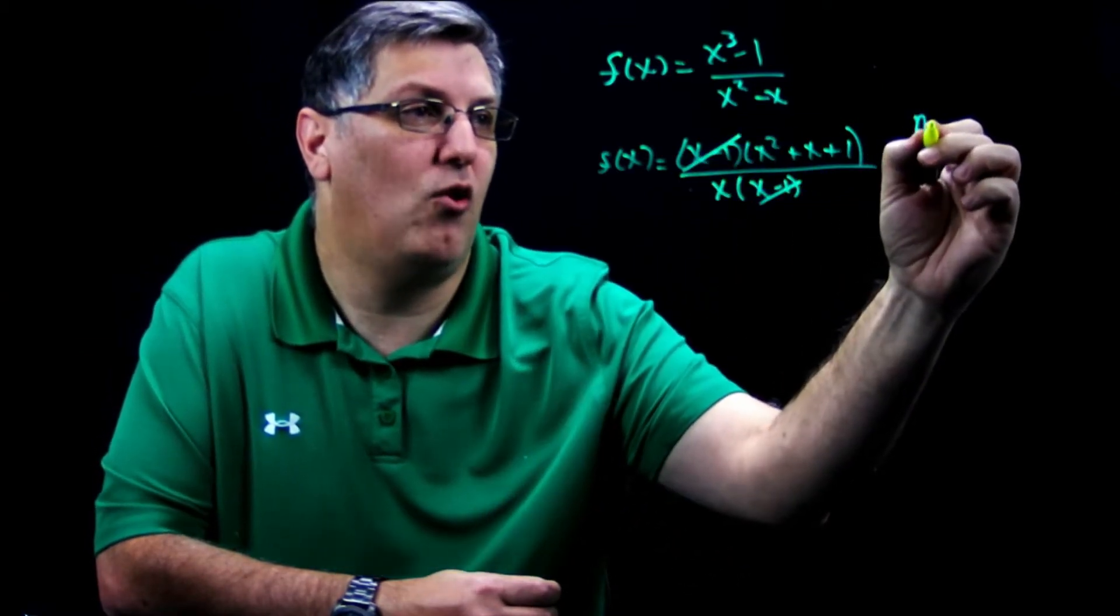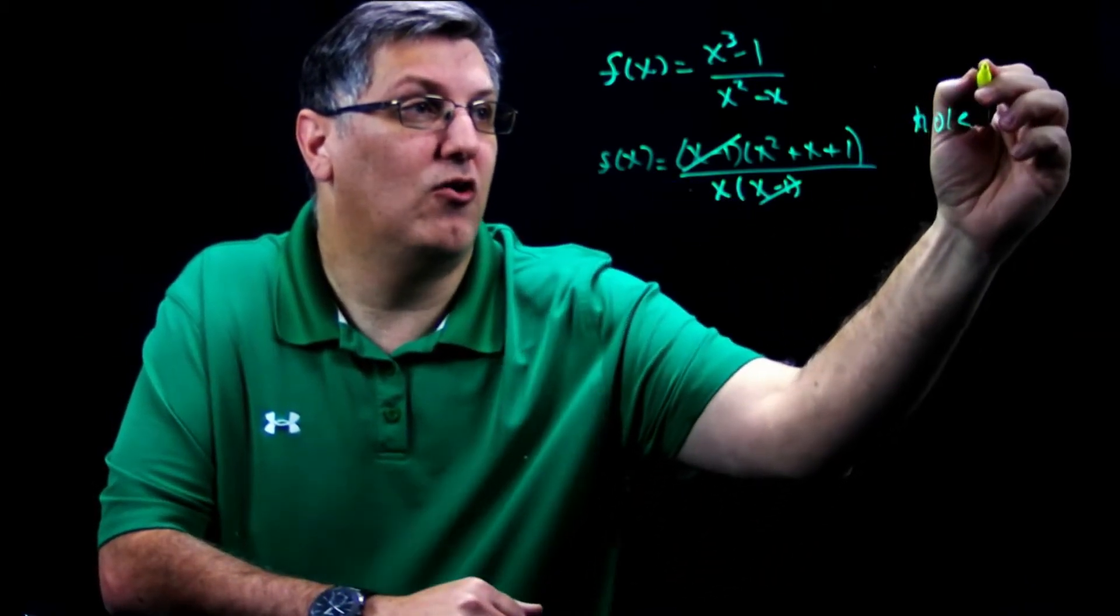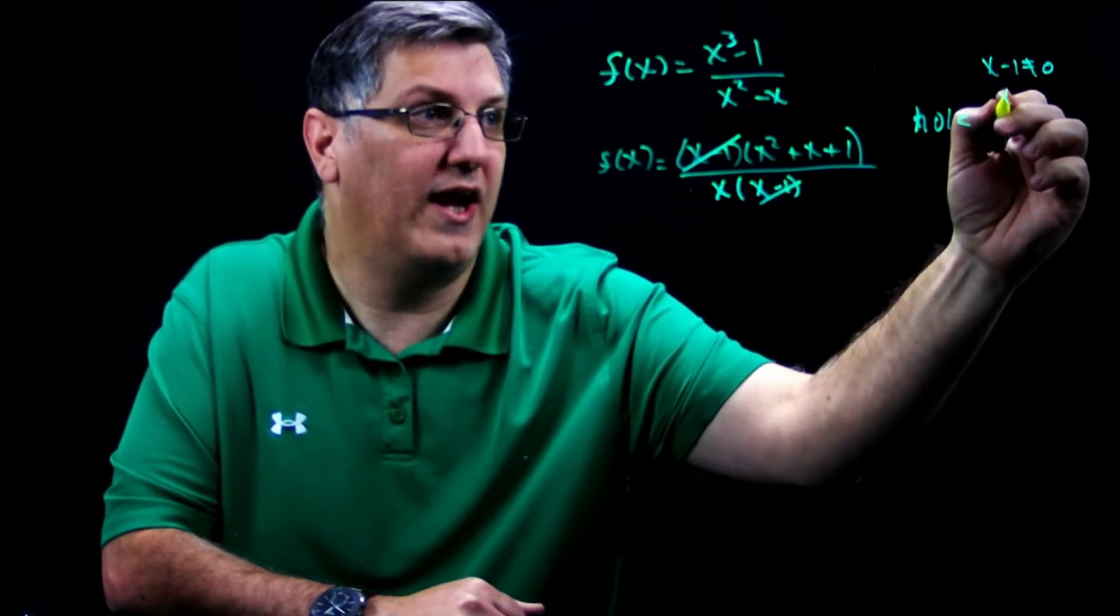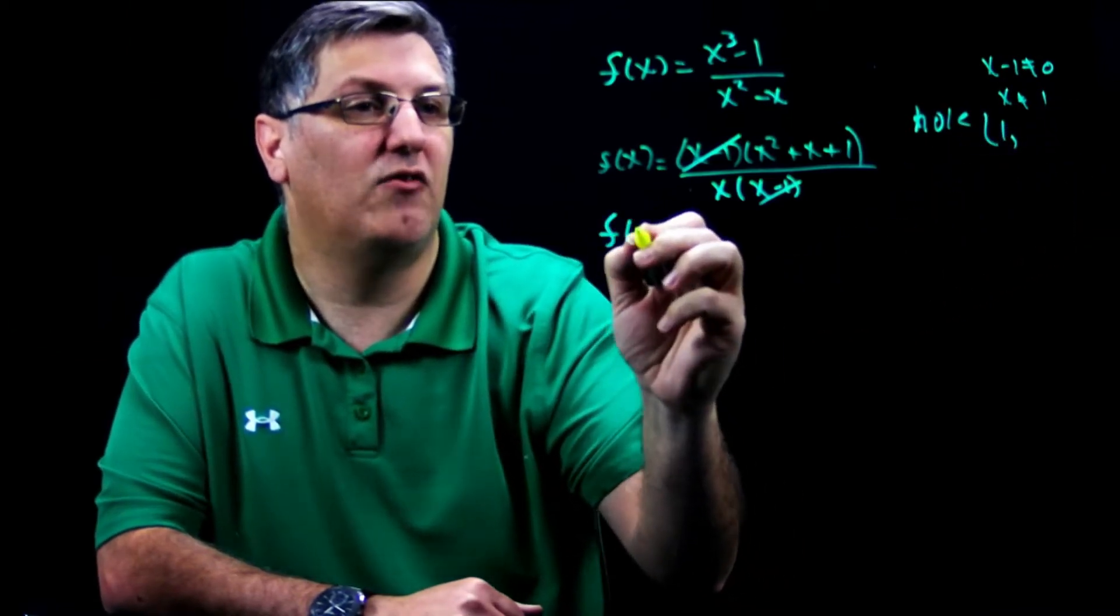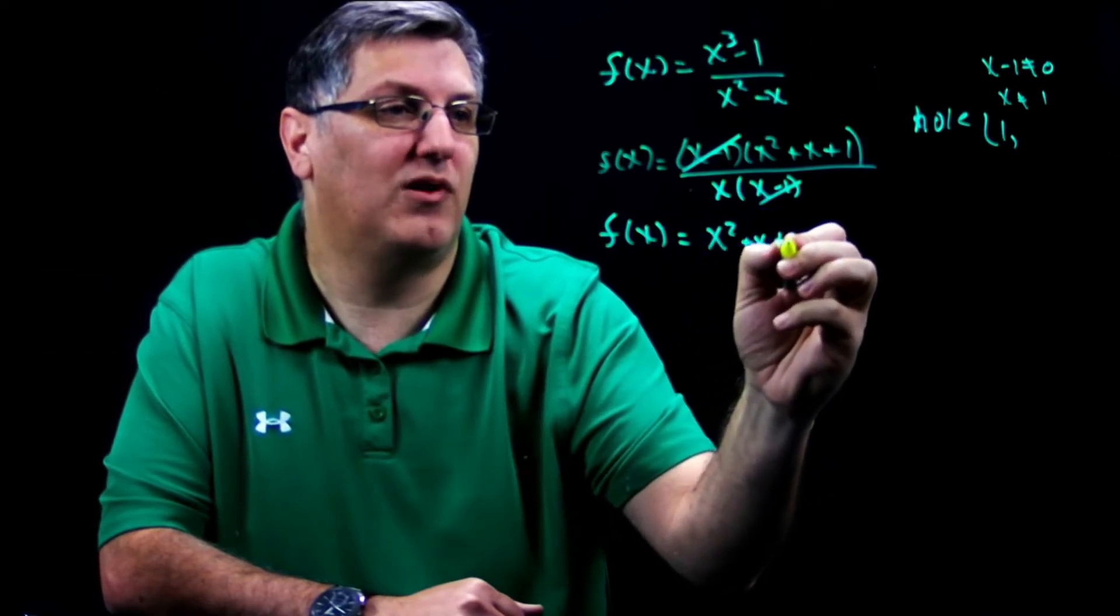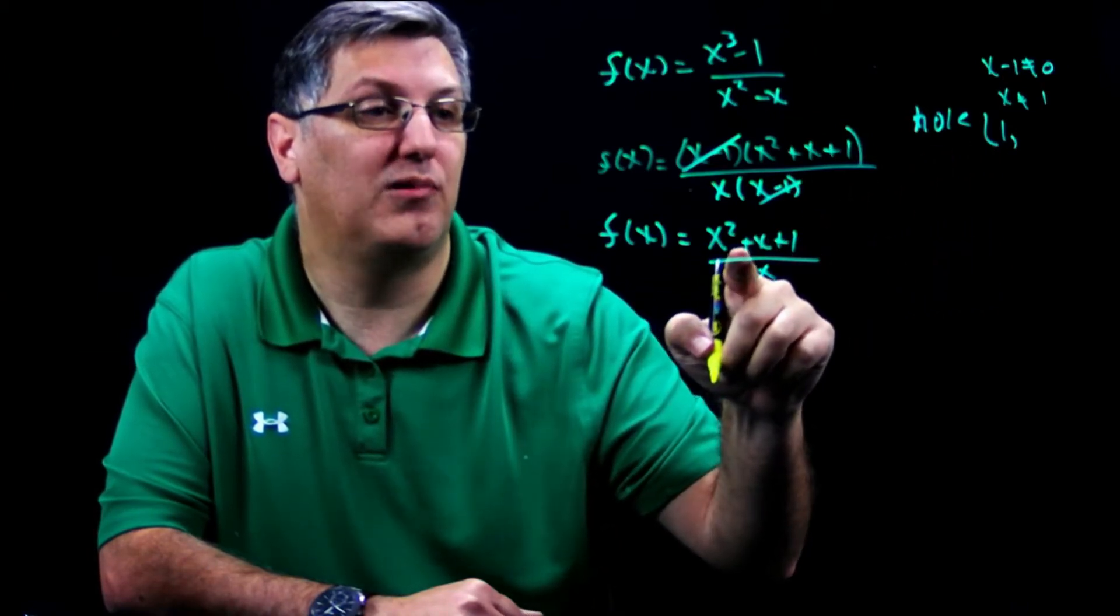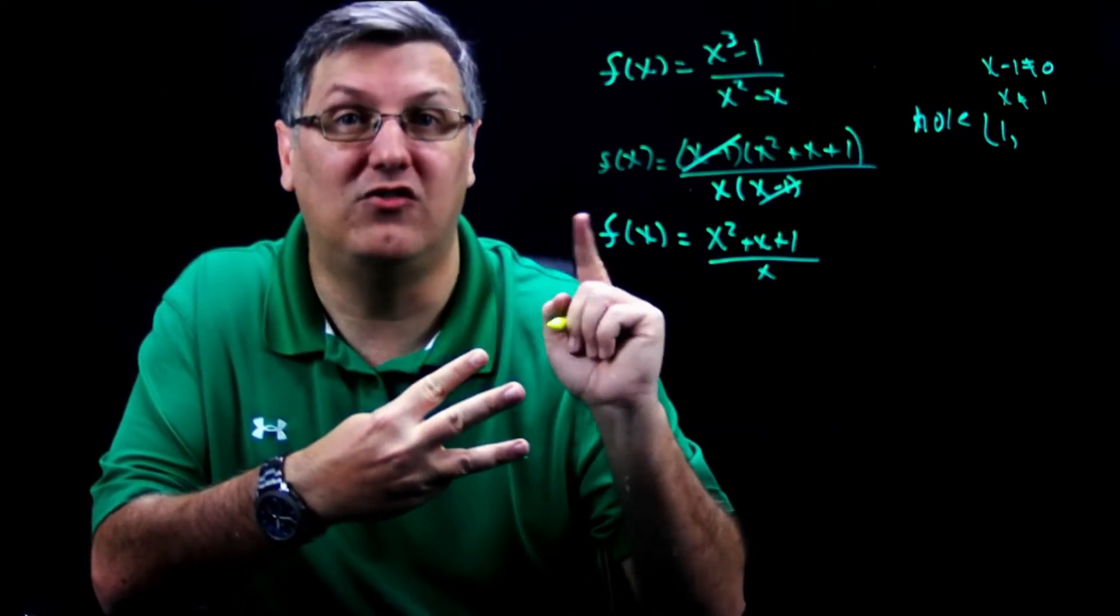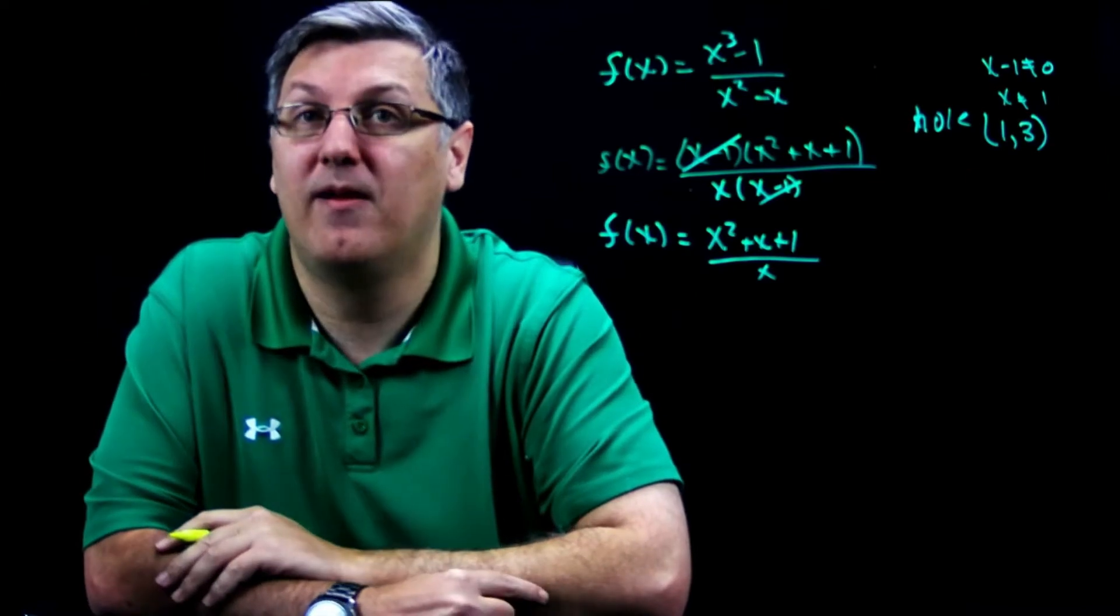I have a hole. Yay, we have a hole. So we know x minus one cannot equal zero, so x cannot equal one. So my hole is going to occur at one. And I now have a reduced polynomial of x squared plus x plus one over x. Take the one, plug it in here. One plus one plus one is three, last time I checked, divided by one still gives me just three. Therefore, my hole is at one, three.